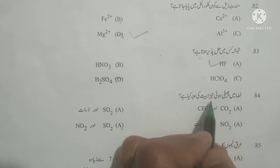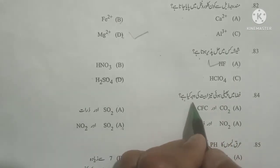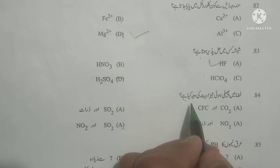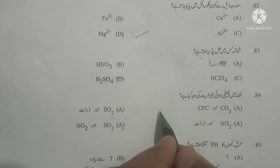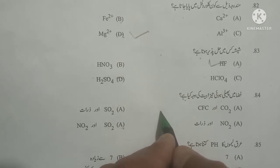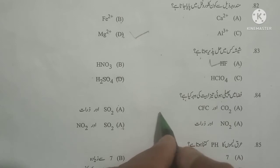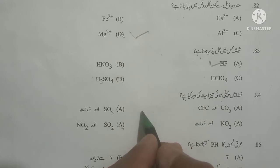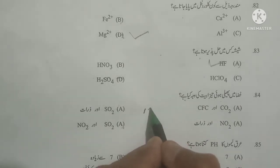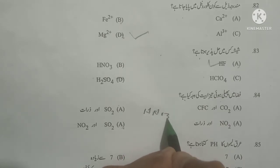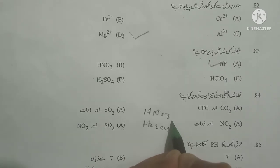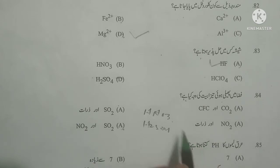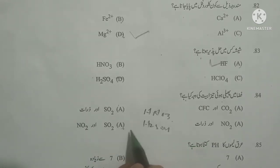Next question: Fiza mein phaili hoi tezabiyat ki wajah kya hai? What is the cause of acidity in the atmosphere? As you know, acidity in the atmosphere is caused by the presence of oxides of nitrogen and oxides of sulfur. When raindrops combine with these oxides, two strong acids are formed: nitric acid and sulfuric acid. Option D is correct.